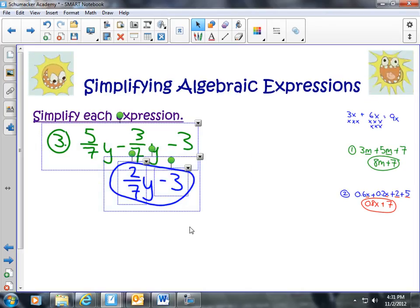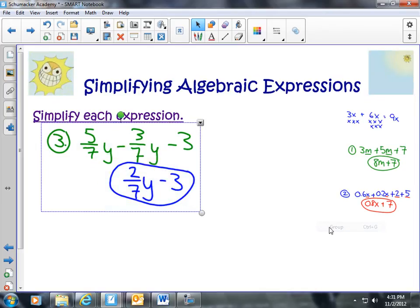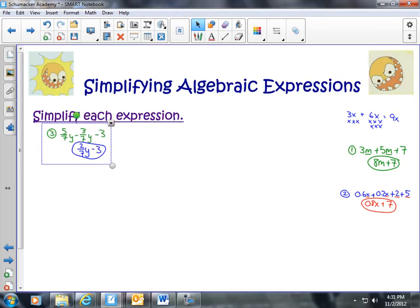So, again, in this case, we have like terms. However, they are fractions. And since they have like denominators, we can just add them together, or in this case, subtract them. And that's how we would simplify our algebraic expression.